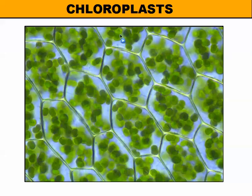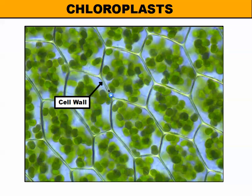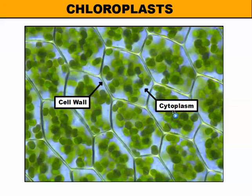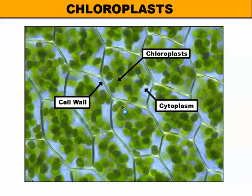Here we have a picture of a cluster of plant cells, and I want to go over a couple of structures so you're familiar with them. Plant cells have cell walls — these clear-looking barriers around the perimeter of the cell which give the cell structure and support. The clear fluid inside the cell that everything's floating in is called the cytoplasm, which both animal and plant cells have. And the star of our show: these green discs you see inside are the chloroplasts — the structures at which photosynthesis occurs. All these cells have tons of chloroplasts to make plenty of food for the plant.